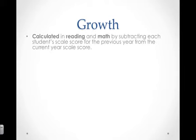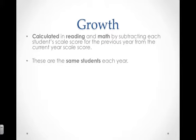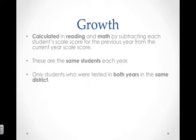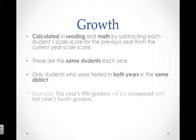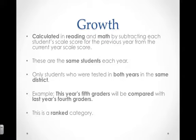Growth is calculated in reading and math by subtracting each student's scale score for the previous year from the current year scale score. These are the same students each year — only students who were tested in both years in the same district. An example would be: this year's fifth graders will be compared with last year's fourth graders. This is also a ranked category.